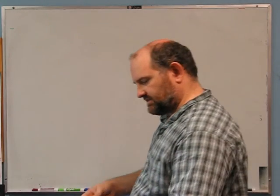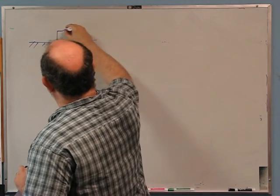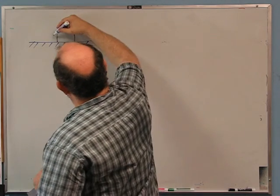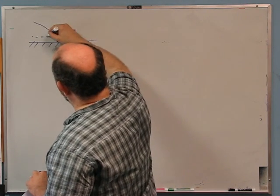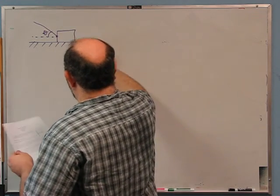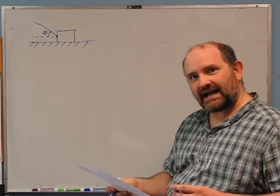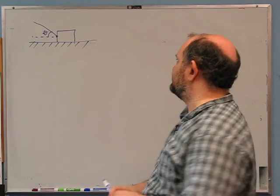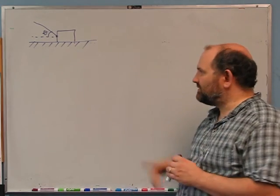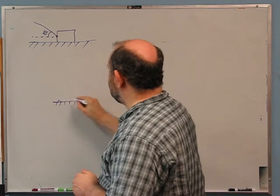The second problem starts with a picture left over from a previous video — it might have been a homework problem. There's a box on the ground. You are exerting a tension force via a cord attached at angle theta off the horizontal. The box is at rest. Where does the normal force effectively act? You might think it acts in the center of the bottom — that's where it's always acted. But that turns out not to be the case here.